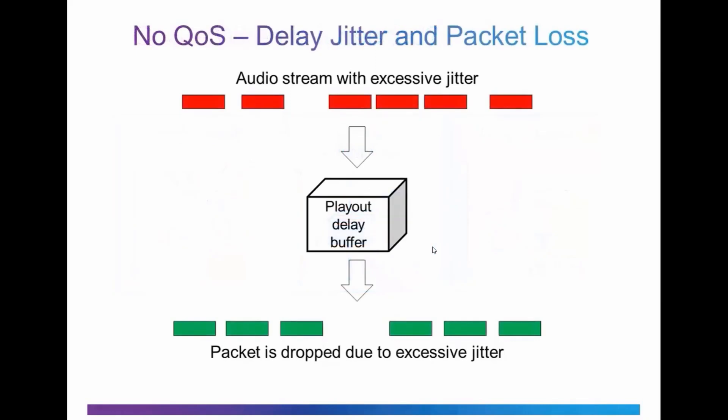Without QoS, packets are processed as they come in, and when we have network congestion or variations in delay which cause jitter, we experience packet loss. If you're trying to stream a voice call or audio stream and you're experiencing excessive jitter, the playout delay buffer can't tolerate it and packets are dropped. Too many packets being dropped results in your call dropping out.